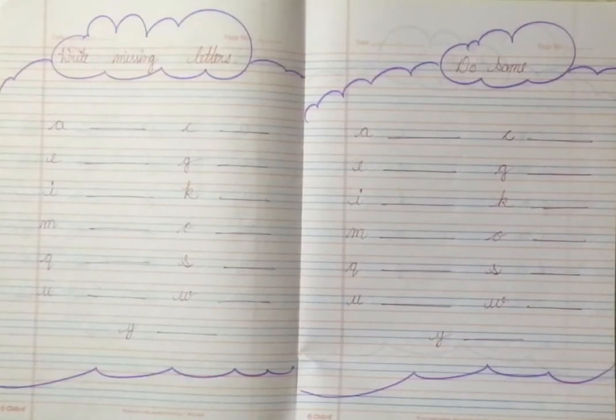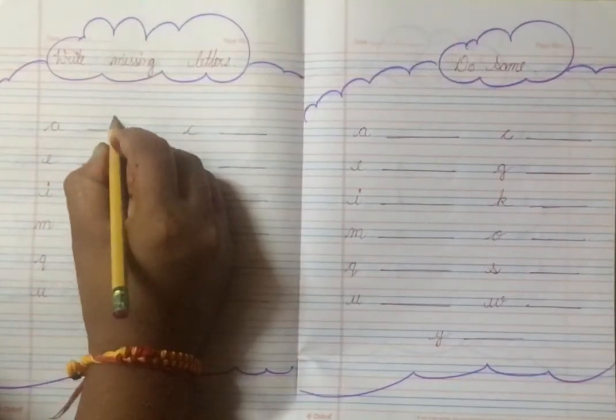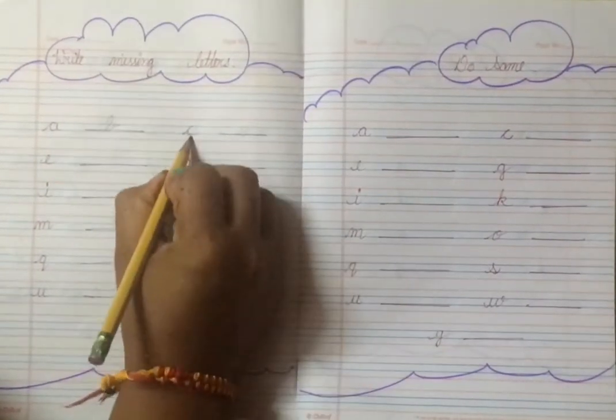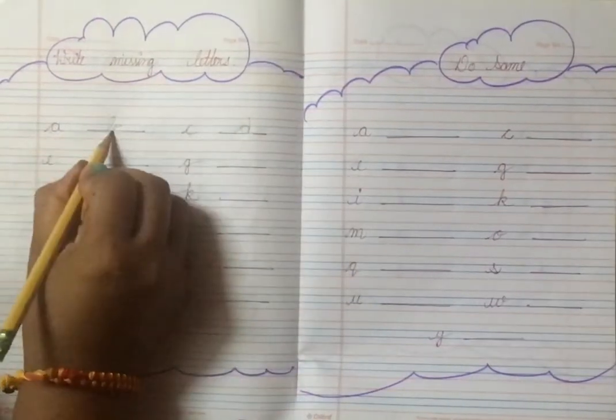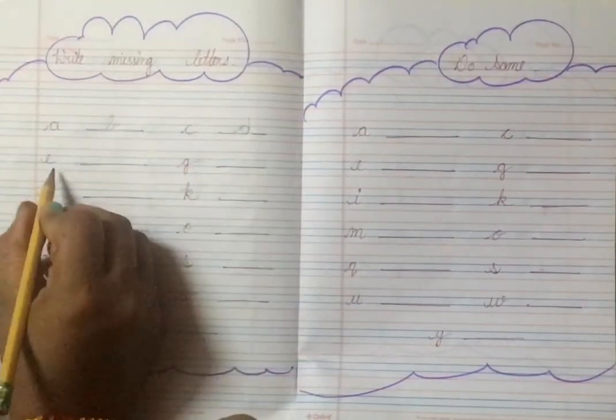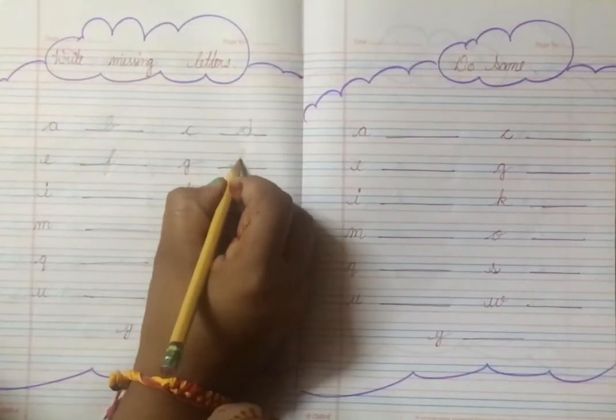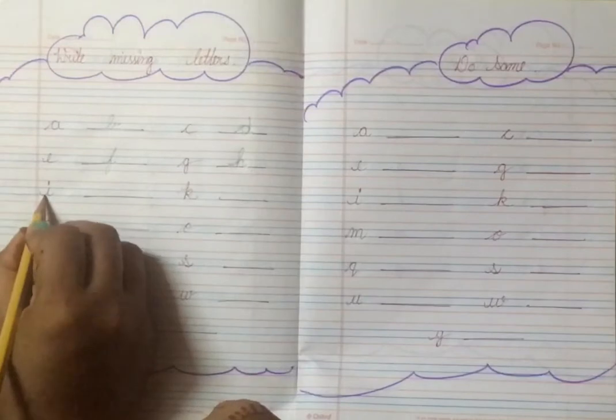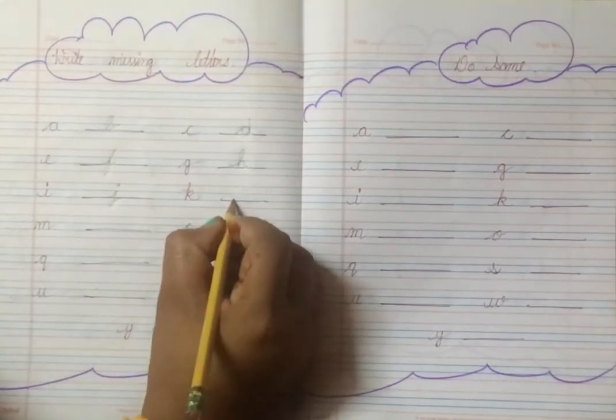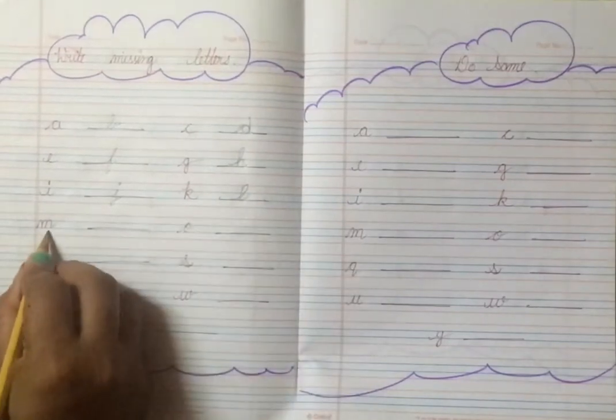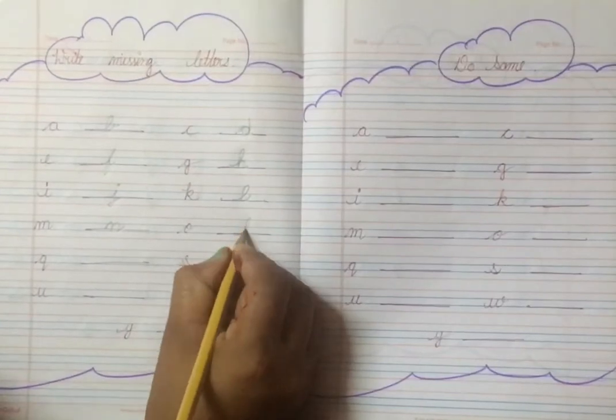So let's start. A ki baad dash banaya. So A ki baad kya ata hai? B. And this is C, D, A, B, C, D, E, F, G, H, I, J, K, L, M, N, O, P.